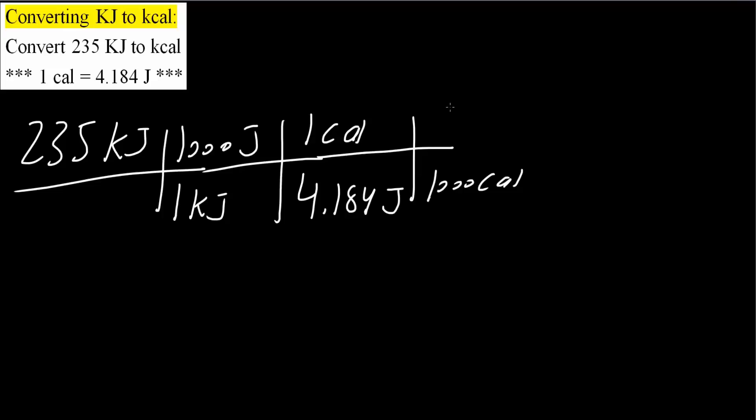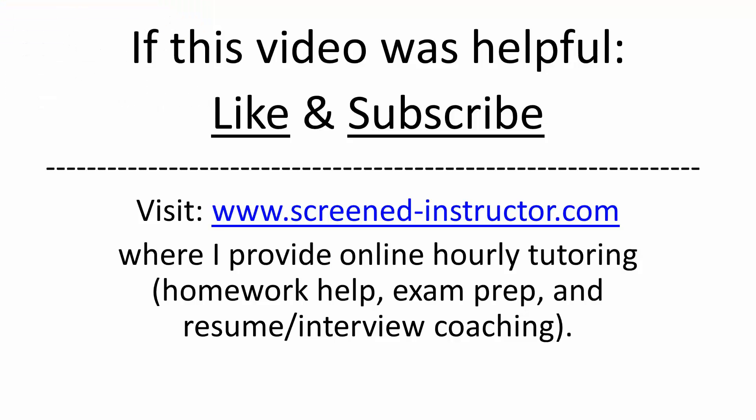And so with that, let's check our units. Kilojoules cancel, joules cancel, calories cancel, and we have kilocalories. So using a calculator, if we multiply everything out we would get 56.2 kilocalories, and that's all we need to do for this problem.